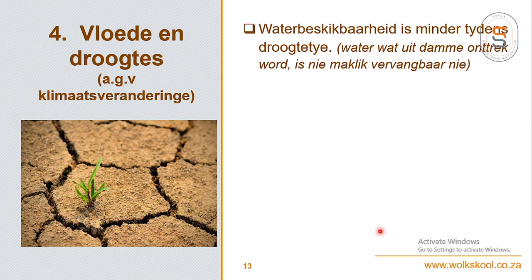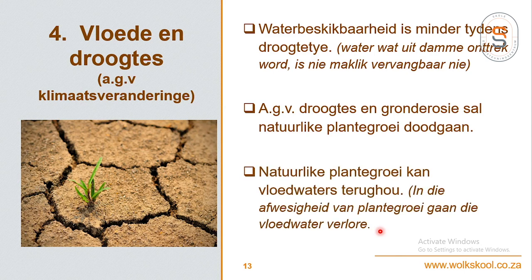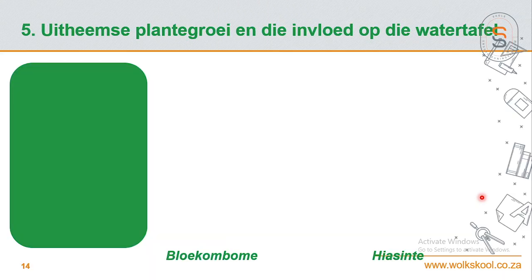As gevolg van droogtes gaan plante doodgaan, gaan dit gronderosie veroorsaak. En 'n plant het 'n baie belangrike funksie - dit is om vloed waters terug te hou want hulle wortels en die plante self hou water in. Maar nou is daar nie plante nie, en as gevolg daarvan, na verskriklike droogtes as dit baie reën het ons vloede, juis omdat daar nie meer natuurlike plantegroei is wat die vloed waters moes gekeer het nie.